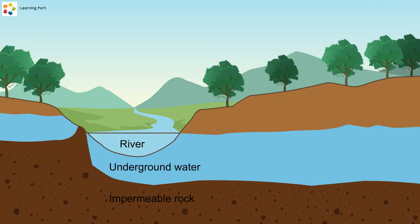"Over time, more and more water accumulates under the ground. This underground water, which is not visible, forms an aquifer. The top of this underground water is called a water table. Some of this underground water may flow out and form a spring like this," says his dad.